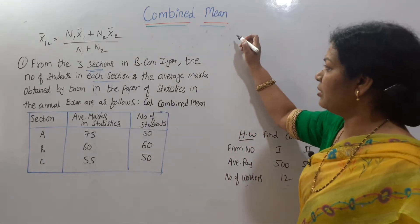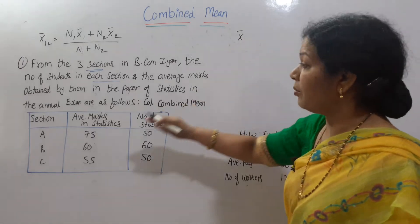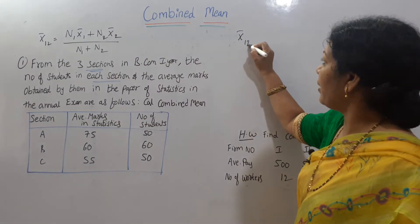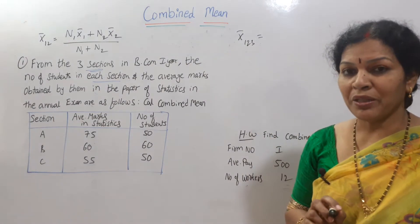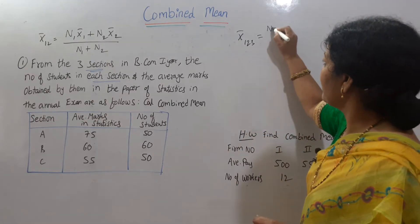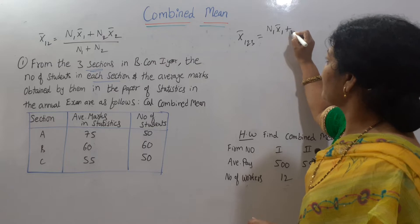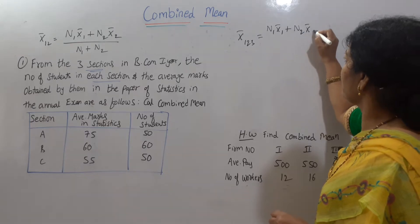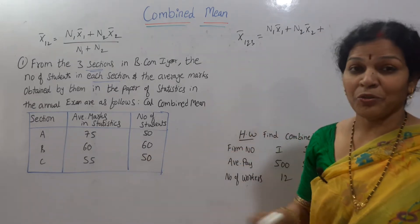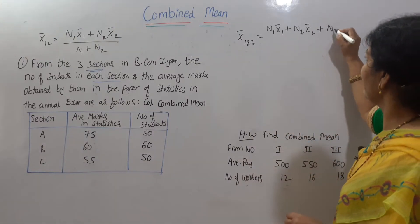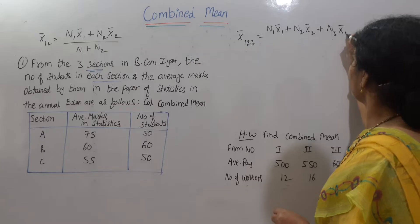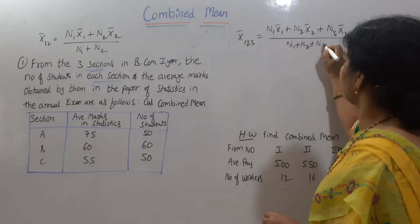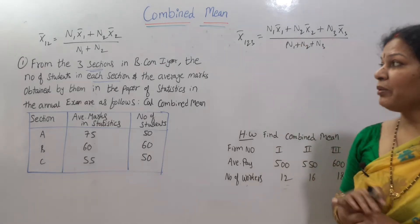Calculate the combined mean. What we need to do is here first we have to write the formula. Formula is here: X bar, how many sections are there? Three sections are there, so I'll extend that formula. X bar 1 2 3 is equal to n1 X bar 1 plus n2 X bar 2 plus third one also, that is why I am extending, n3 X bar 3 by n1 plus n2 plus n3.